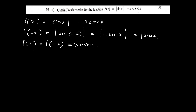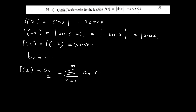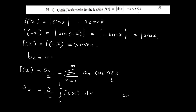When the function is an even function, bₙ is equal to 0. The Fourier series is: f(x) = a₀/2 + summation n=1 to infinity of aₙ cos(nπx/l). The coefficient a₀ equals 2/l integral from 0 to l of f(x) dx, and aₙ equals 2/l integral from 0 to l of f(x) cos(nπx/l) dx.